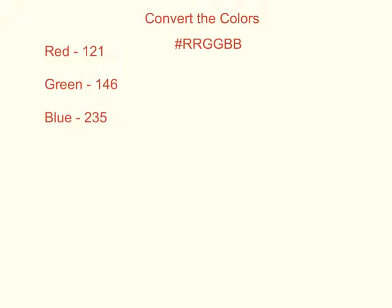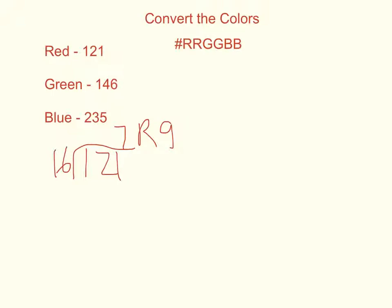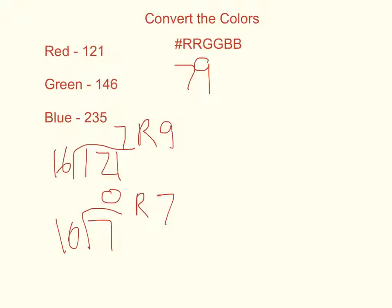Let's look at the first one — red. We are going to do 121 divided by 16. 121 divided by 16 has the answer of 7 with a remainder of 9. So this 9 is going to be what goes in that first digit. Then 7 divided by 16 gives 0 with a remainder of 7, so the 7 is going to go there.